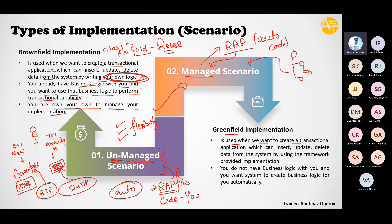The managed scenario is used when you want to create a transactional application that can insert, update, and delete data from the system using framework-provided implementation. The framework provides the base implementation out of the box — you don't have to worry, the code will auto-generate automatically. But you might ask: what about my own custom coding? For example, when creating a sales order, I want to check if the material is in stock. Those things can still be checked in the managed scenario as well, because RAP will give you some hook points.